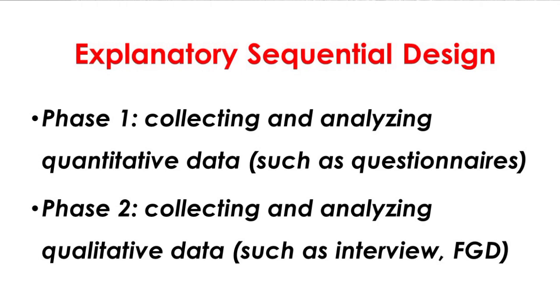In the explanatory sequential design, this design occurs in two phases. It begins with collecting and analyzing quantitative data, and then follows it with qualitative collection and analysis. Using the same study, the researcher gathers quantitative data through survey questionnaires. Once the data has been analyzed, the researcher then explores unexpected findings and explains them through qualitative means. For example, if survey results show that blended learning modalities made teachers and students use more digital technologies, the researcher may proceed with collecting qualitative data by interviewing students and teachers to delve deeper into this finding.